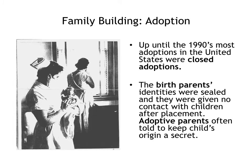Traditionally, couples who experienced infertility but wanted to build a family, or couples who wanted to build a family but not do so by giving birth to their own biological children, were left with the option of adoption. Up until the 1990s, most adoptions in the United States were traditional, closed adoptions — meaning everything about the process was kept a secret from as many people as possible. This was due to the extreme stigma surrounding adoption, infertility, and sex or pregnancy outside of marriage.